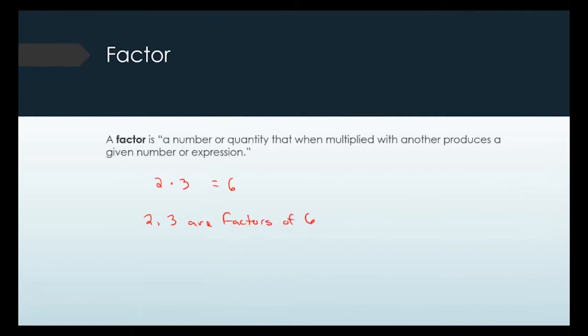Another way to think about it: factors are things that can divide into your overall number. So factors of 6 could be 1, 2, 3, and 6 — they all divide into 6 with no remainder. Thinking of factors as what you can divide out is the most common way to think about a factor.